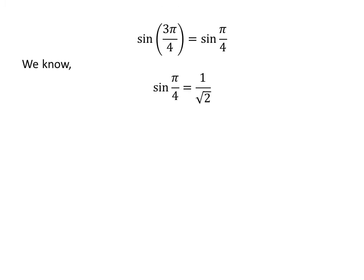We know sine of pi upon 4 is equal to 1 upon square root of 2. So, sine of 3 times pi upon 4 is equal to 1 upon square root of 2.